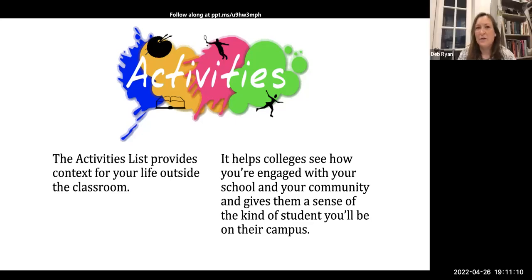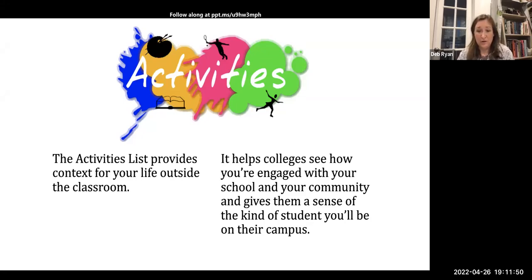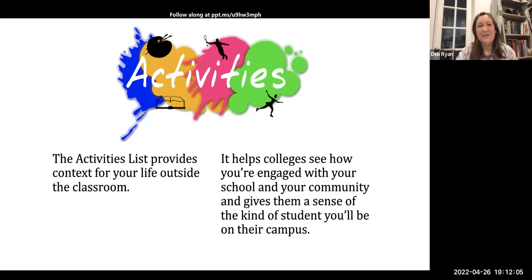Sometimes students feel pressure to join 48 clubs and have 36 things on their resume. In the Common App, you can only list 10, which is a real signal that instead of spreading yourself really thin, you should really engage with things that are meaningful to you. Students ask me the magic number question — how many things should I be engaged with? If you play a sport, play the club team of that sport, and you're babysitting your little sister, maybe you only have three or four activities and that's okay, as long as they're meaningful and you spend a lot of time on them.